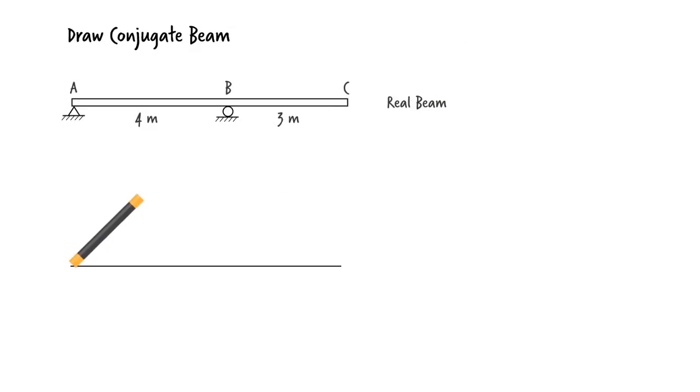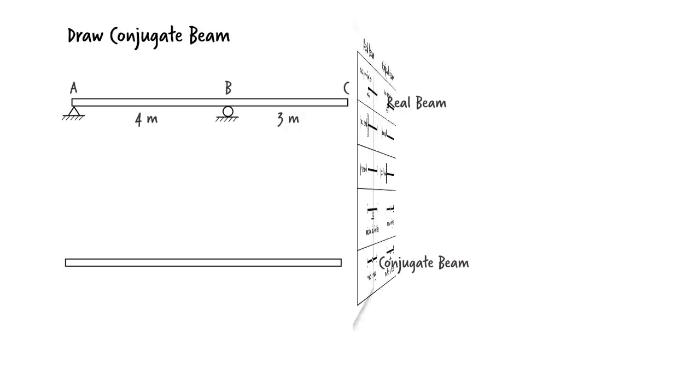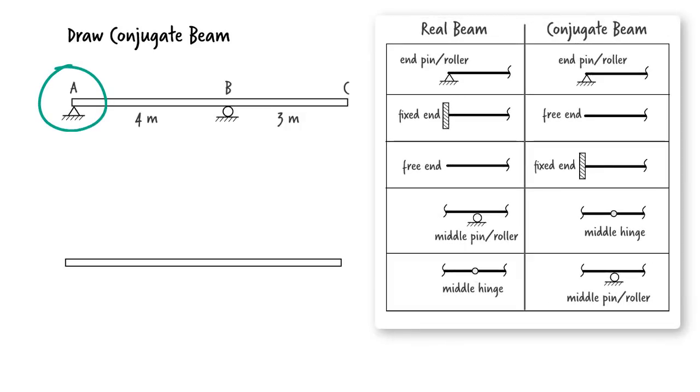Ok, what does the conjugate beam look like? According to our table, the pin at A remains a pin.